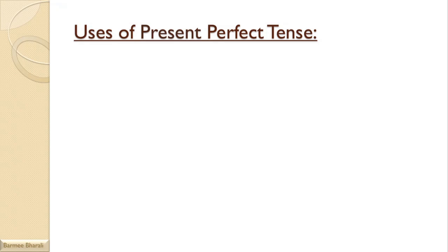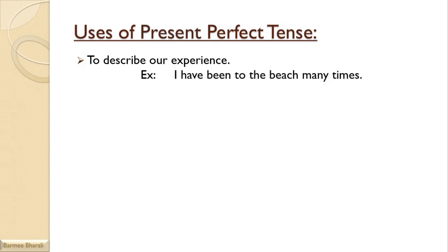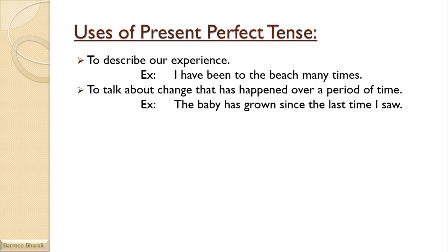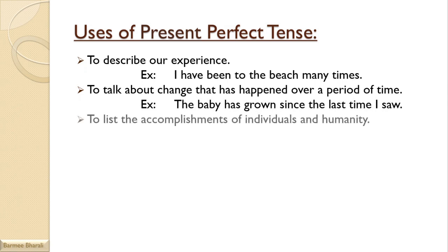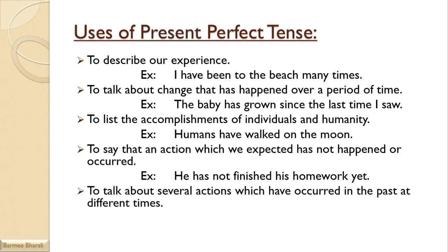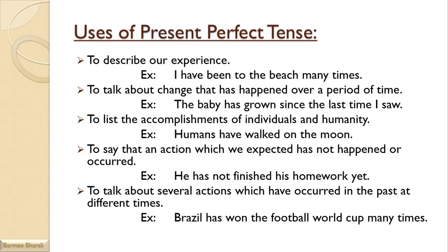Now we have come to the uses of present perfect tense. It is used to describe experience, like 'I have been to the beach many times.' To talk about change over a period of time, like 'The baby has grown since the last time I saw.' To list accomplishments of individuals or humanity, like 'Humans have walked on the moon.' To say an expected action has not happened, like 'He has not finished his homework yet.' Also to talk about several actions occurring at different times, like 'Brazil has won the Football World Cup many times.'